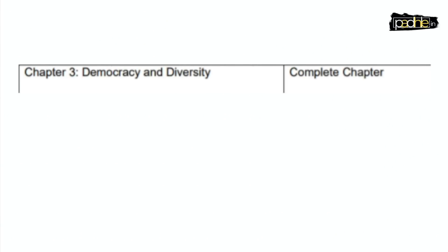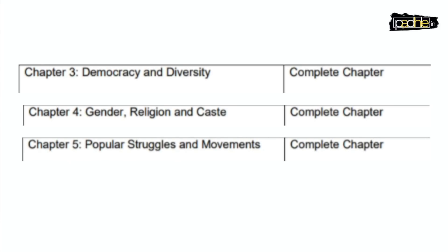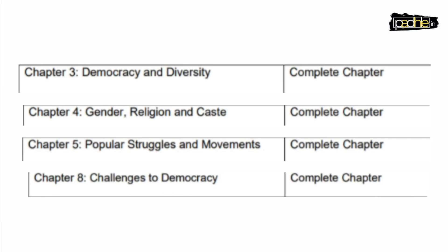In Civics, Chapter 3 — Democracy and Diversity, Chapter 4 — Gender, Religion and Caste, Chapter 5 — Popular Struggles and Movements, and Chapter 8 — Challenges to Democracy are all removed. Chapters 1, 2, 6, and 7 are retained.